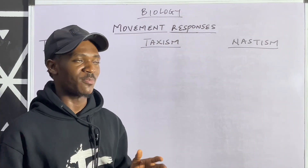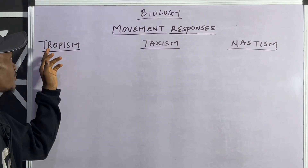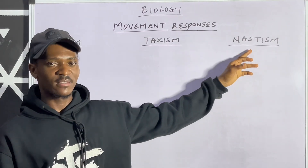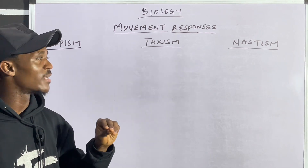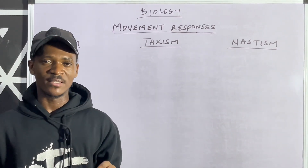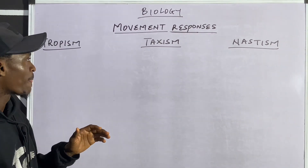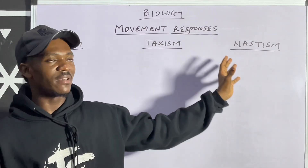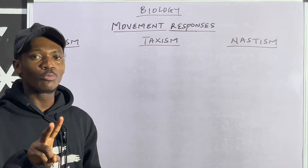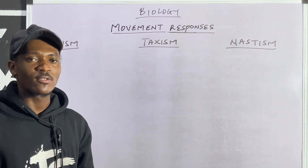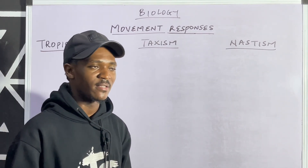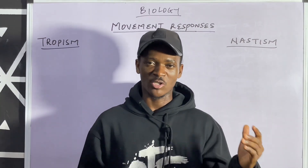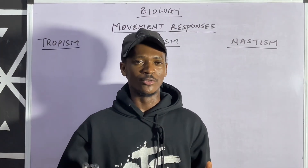On the board we have tropism, taxis, and nastism — these are the three main movement responses of living organisms. To make this simplified, I will differentiate these three movement responses using two parameters. The first parameter is: is the movement response directional or non-directional?